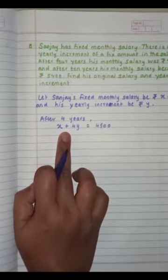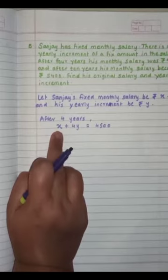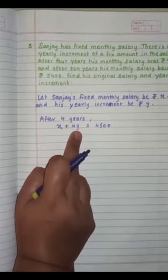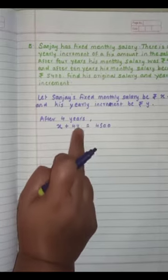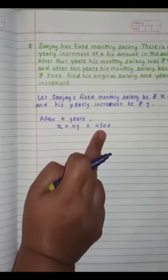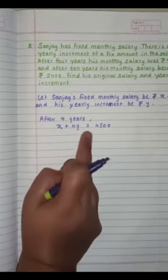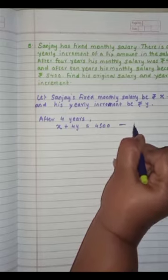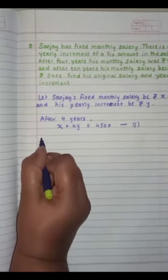Again, I am explaining. After 4 years, Sanjay's fixed salary remains same, that is X. But his increment will become 4Y. So together, he got 4,500. Hence, we add and we got the equation X plus 4Y is equal to 4,500, equation number 1.